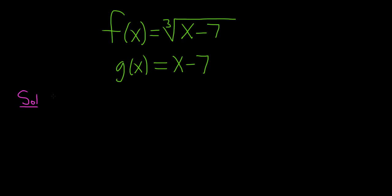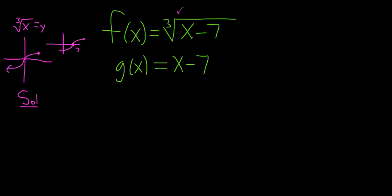We're going to do it all by hand. First, notice that this is the cube root of x minus 7. So if you just had the cube root of x, the cube root function looks something like this — that's the rough shape. And when you subtract 7 from the x coordinate, it translates it over to 7. So it does something like this. This is a rough picture of the graph of f of x.